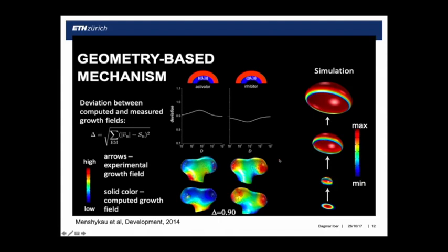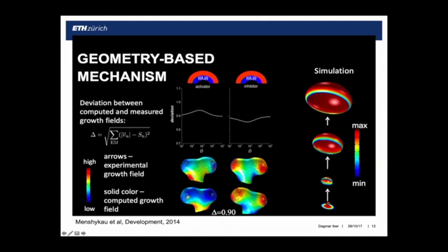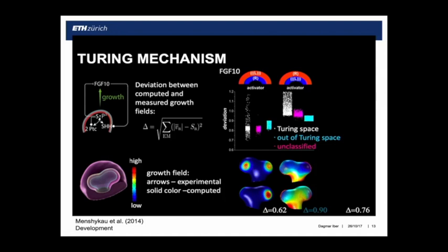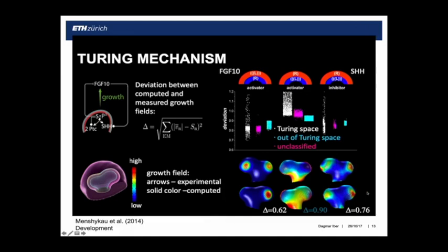Also if you simulate the geometry-based mechanism, you get the signal in the center of the domain and support formation of a bud, but once you have a bud you can't make a bifurcation anymore because increasing curvature pushes the signal away. With the Turing mechanism, we screened thousands of parameter sets and the best parameter sets give a perfect match. This is with FGF10 in the mesenchyme and its receptor on the epithelium as it is in biology. If you swap that, you don't get a match. Sonic hedgehog has this distribution but it's an inhibitor of branching, and that also works. Even at later stages with more complex geometries it still works.